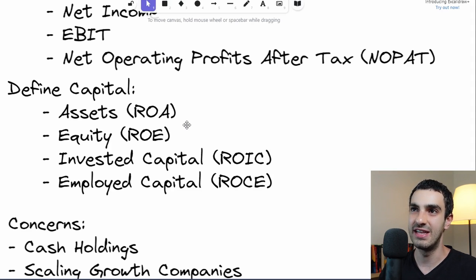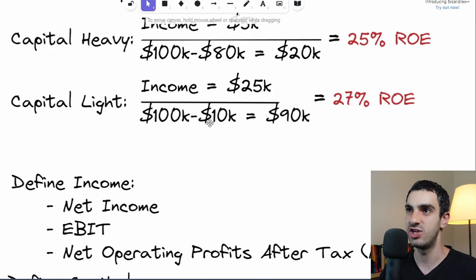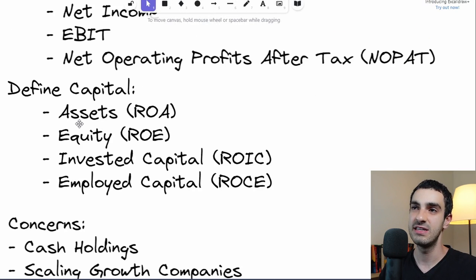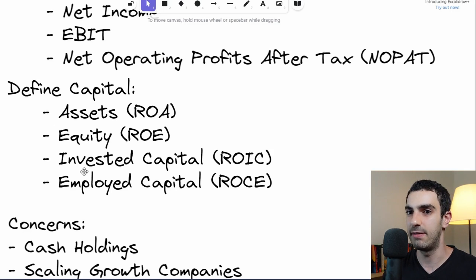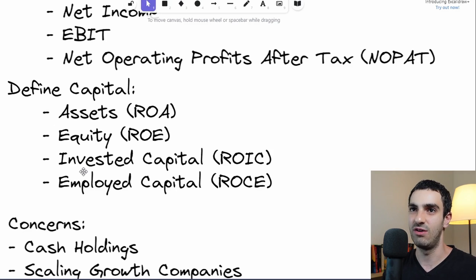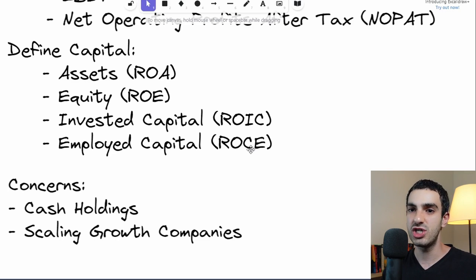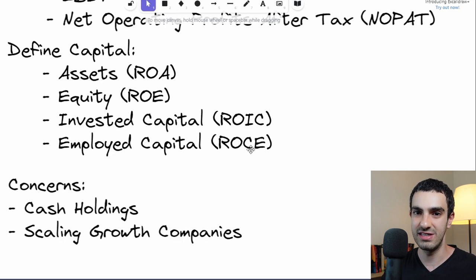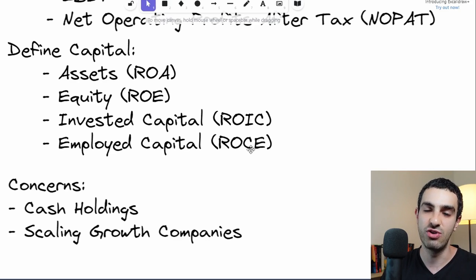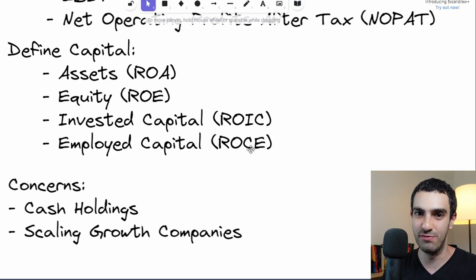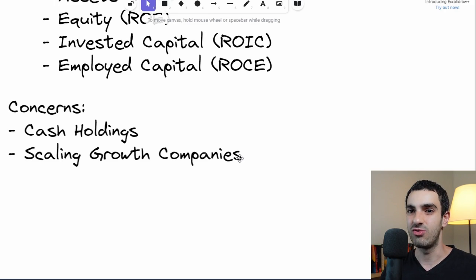Next, we need to define what counts as 'capital' in the denominator. We can use assets — giving Return on Assets — equity for Return on Equity, or invested capital and employed capital. Every person calculates these a bit differently, and these variations give a better picture for some companies where the standard ratios are less informative. I may cover these in a follow-up video, so subscribe for that.